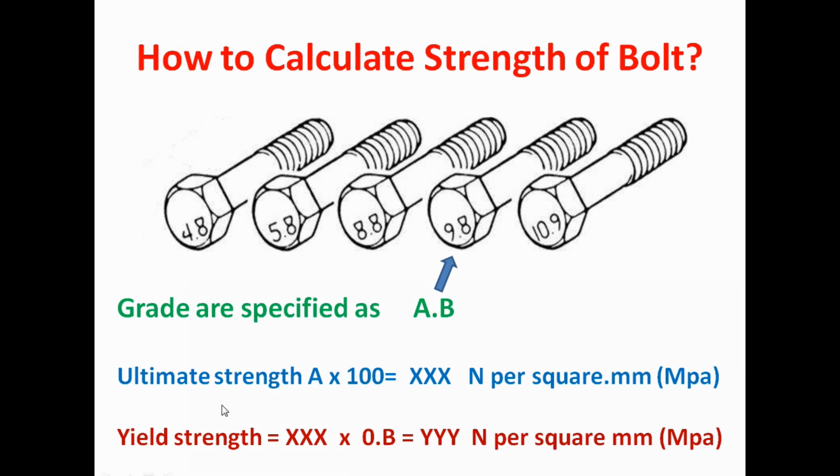And our yield strength formula is XXX times 0.B. Here XXX is nothing but the ultimate strength. Ultimate strength times 0.B. That means 0 point the second digit.